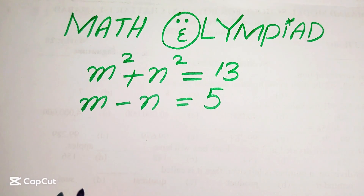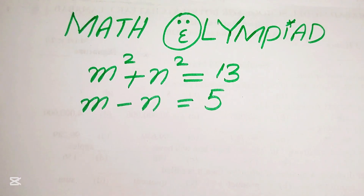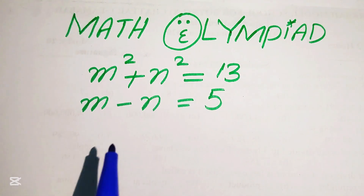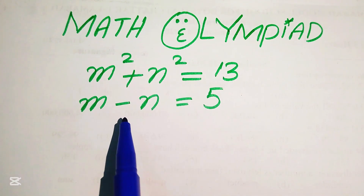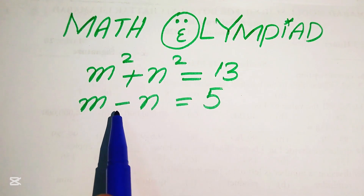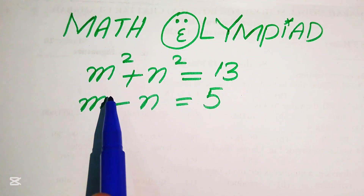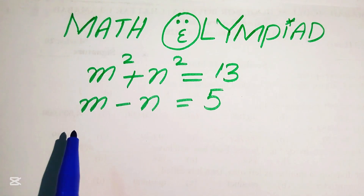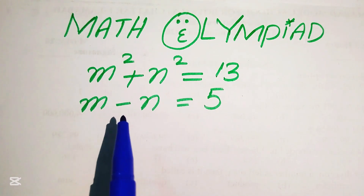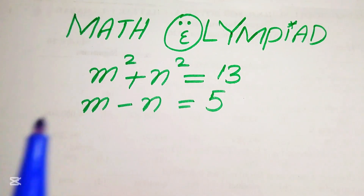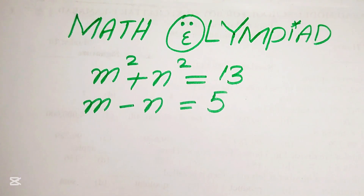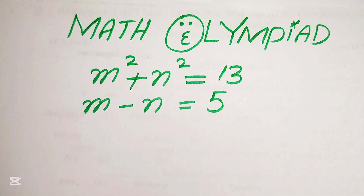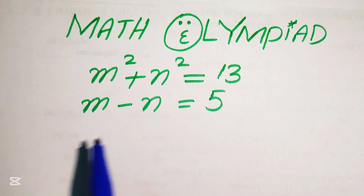Hello everyone, welcome. We are going to solve a nice algebra problem. Here we have two simultaneous equations: m² + n² = 13 and m - n = 5. We will solve this problem for the values of m and n.